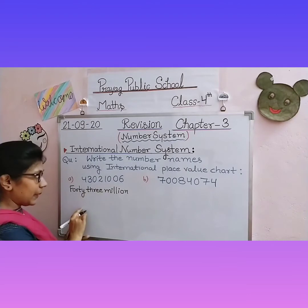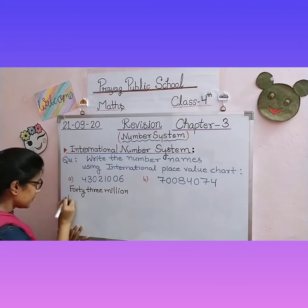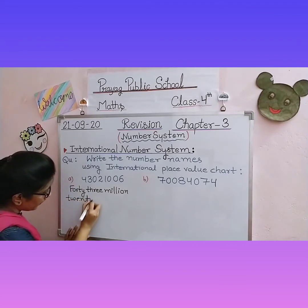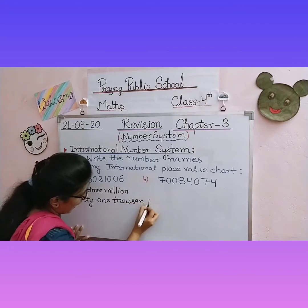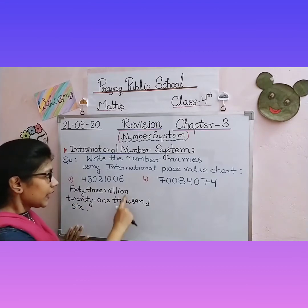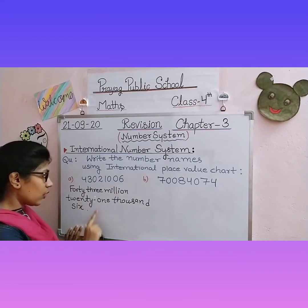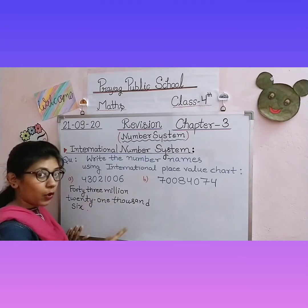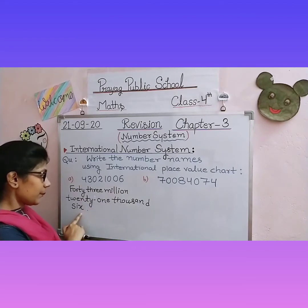Here there is a zero, so we skip it. Then we write twenty-one thousand. And last we write six. Two important points to remember: do not write in plural, and do not use 'and'. For example, do not write 'forty-three million and twenty-one thousand and six' — that would be wrong. Write it as: forty-three million, twenty-one thousand, six.